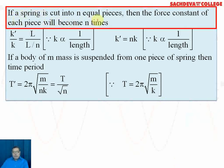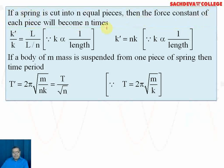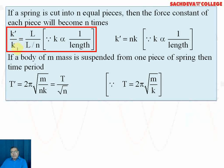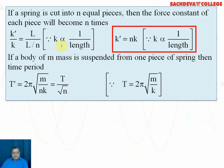If a spring of length l is cut into n equal pieces, each piece has length l/n. The force constant of each piece becomes n times the original. We derive this by writing the equations for k' and k, then dividing: k'/k = l/(l/n). Since k is inversely proportional to length, l cancels and n comes to the numerator, giving k' = nk.